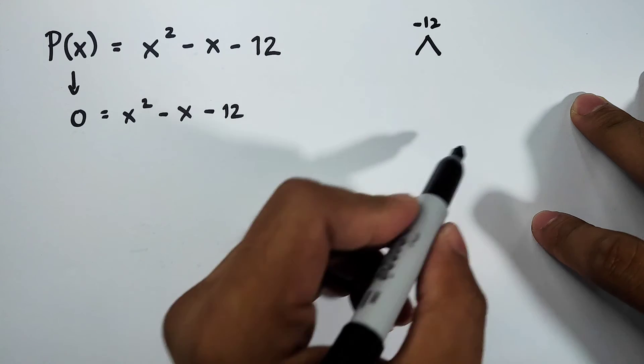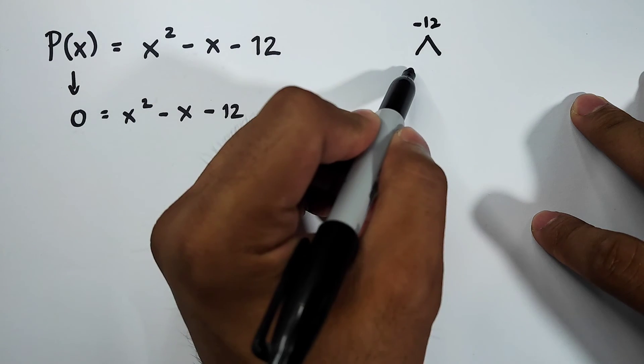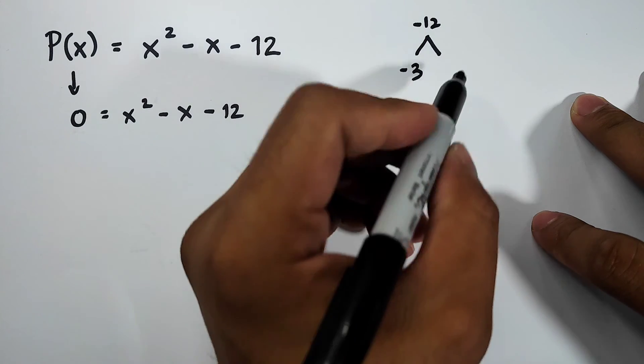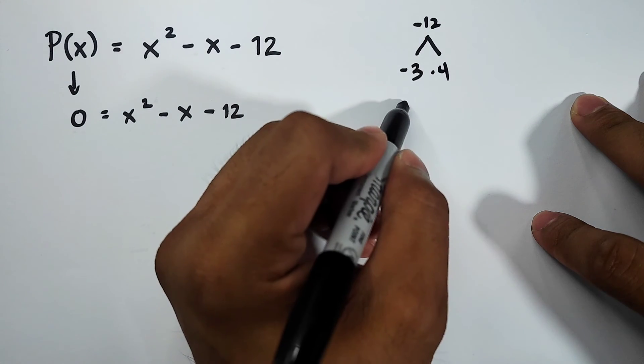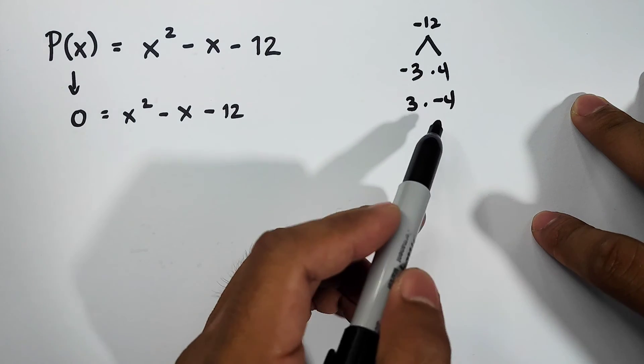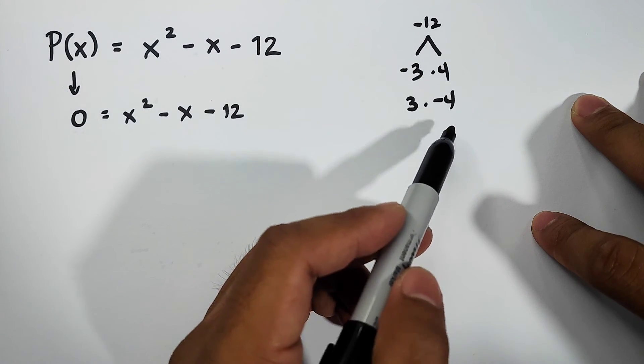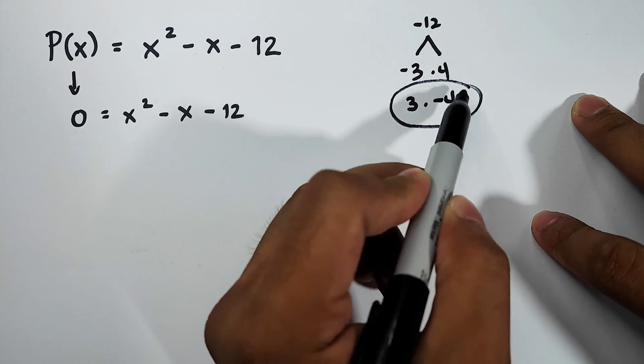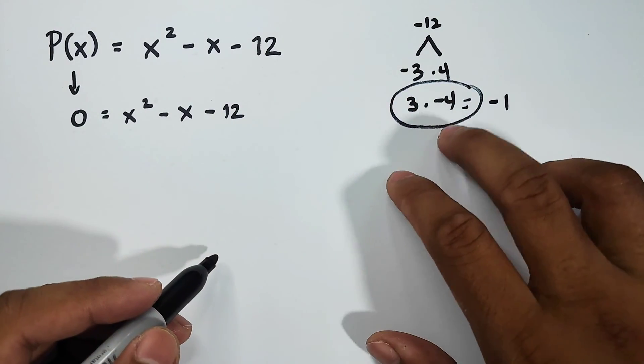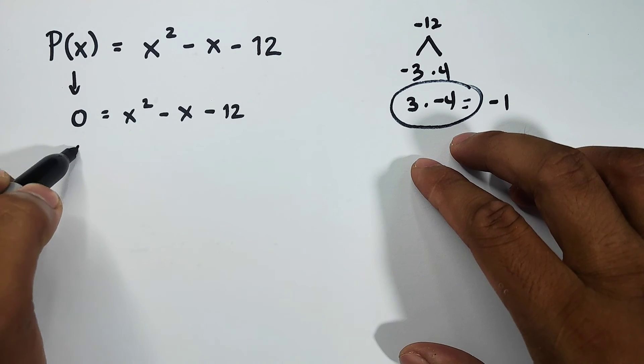What are the factors of -12 that could give us -1? The factors are -3 times 4, or it could be 3 times -4. Among the two, which will give you the answer of -1? It is this one, because this equals -1, meaning the factors are (x + 3)(x - 4).